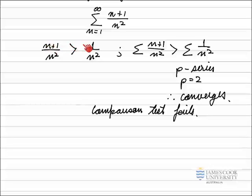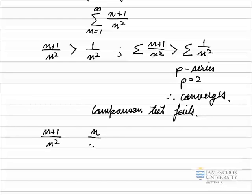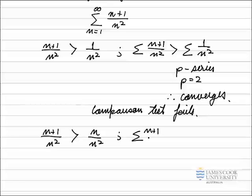Instead of taking out the n and leaving 1, I'll compare the term to n over n squared — leaving the dominant term n squared in there but also keeping the n. So I'll trial comparing n plus 1 over n squared to n over n squared. To go from the left to the right, I've subtracted 1, so the one on the right is definitely smaller. Adding all of those up, the series of n plus 1 over n squared must be greater than the series of n over n squared.